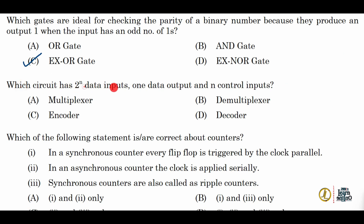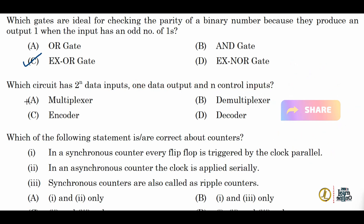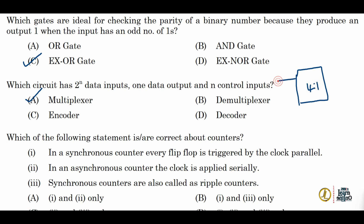Next: which circuit has 2-raised-to-n data inputs, 1 data output, and n control inputs? That is a multiplexer. For example, a 4-by-1 multiplexer has 4 inputs, 2 control or selection lines, and 1 output. If n = 2, then 2-raised-to-2 = 4 inputs, 2 selection inputs, and 1 output. So option A — multiplexer — is the correct answer.